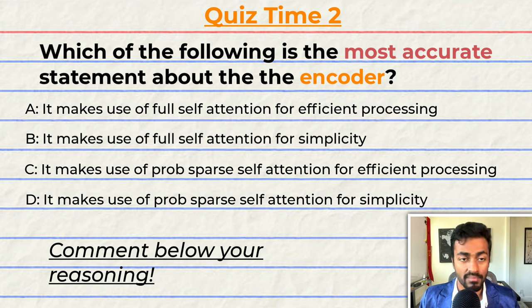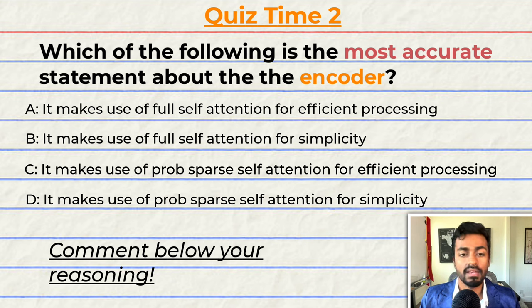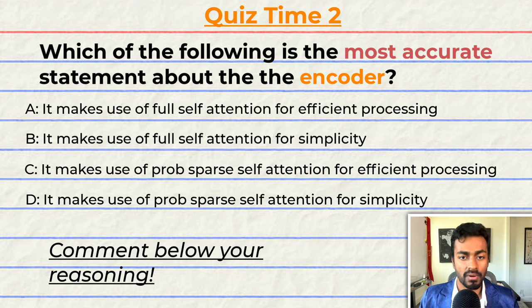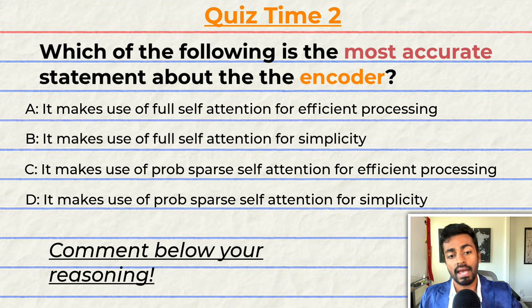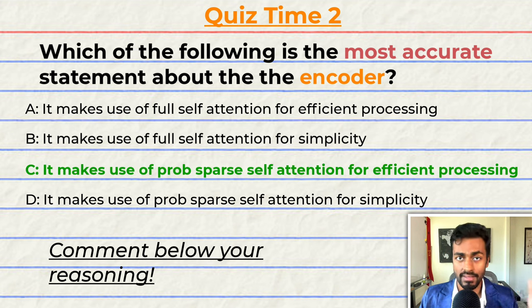Quiz time! Have you been paying attention? Which of the following is the most accurate statement about the encoder? A: it makes use of full self-attention for efficient processing. B: it makes use of full self-attention for simplicity. C: it makes use of prob sparse self-attention for efficient long sequence processing. The correct answer is C — can you tell me why in the comments below? That's it for quiz two and pass two, but keep paying attention because I will be back to quiz you.